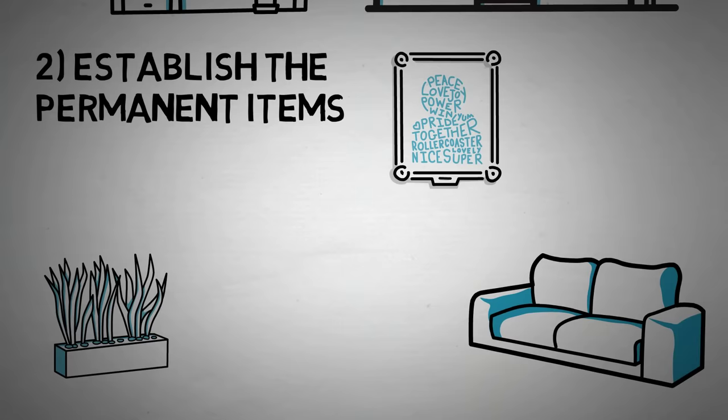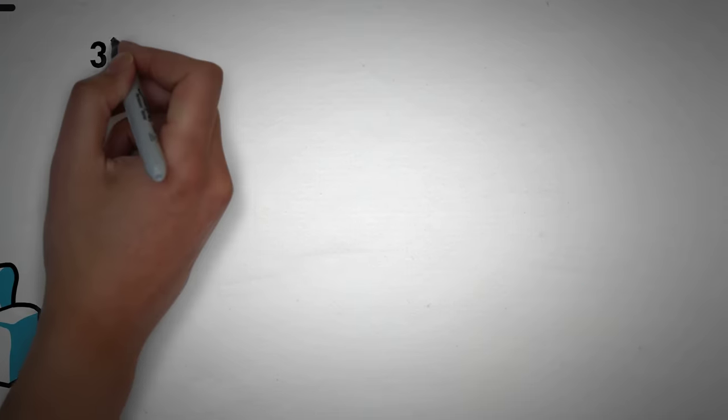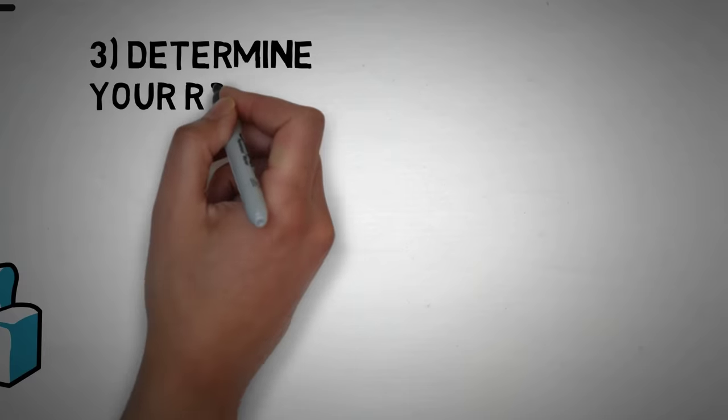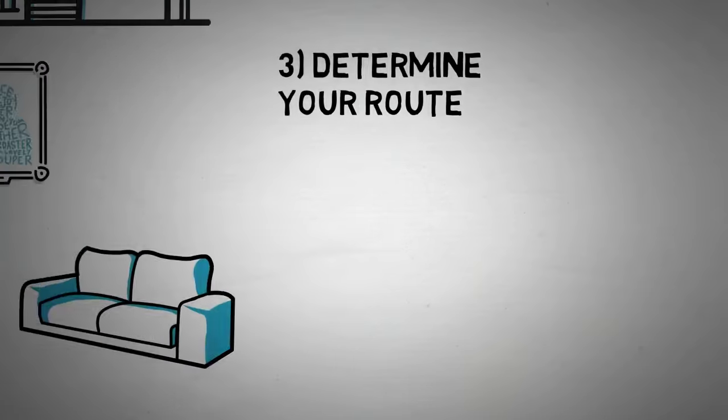It also helps that the items are different enough that I don't have trouble differentiating them. Once you have this step down, you're ready for the next step in the process. That step, or step number three, is determining your route.